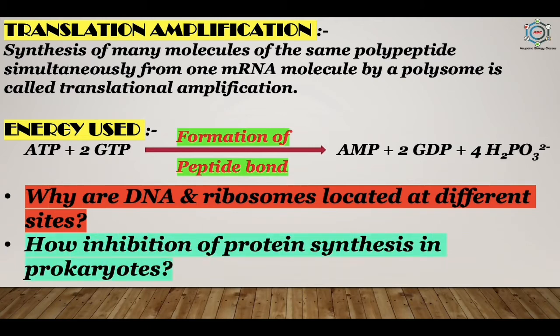Protein synthesis in bacteria is inhibited by certain antibiotics at various stages, including tetracycline, streptomycin, chloramphenicol, erythromycin, and neomycin. Inhibition of protein synthesis clears bacterial infection without harming humans, indicating that there are differences in the molecular structure of prokaryotic and eukaryotic ribosomes.